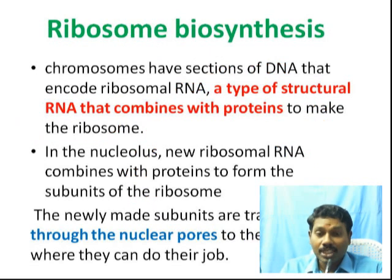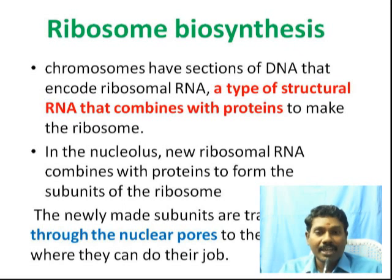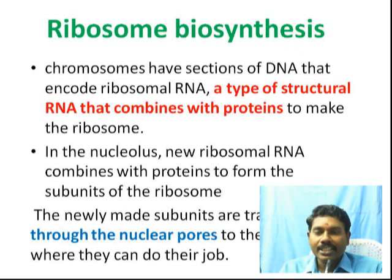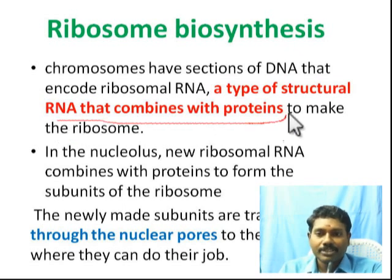The nucleolus contains chromosomes. The DNA in the chromosome codes for ribosomal RNA. When ribosomal RNA combines with proteins, it forms the ribosome. This is how the ribosome gets manufactured in the nucleolus.